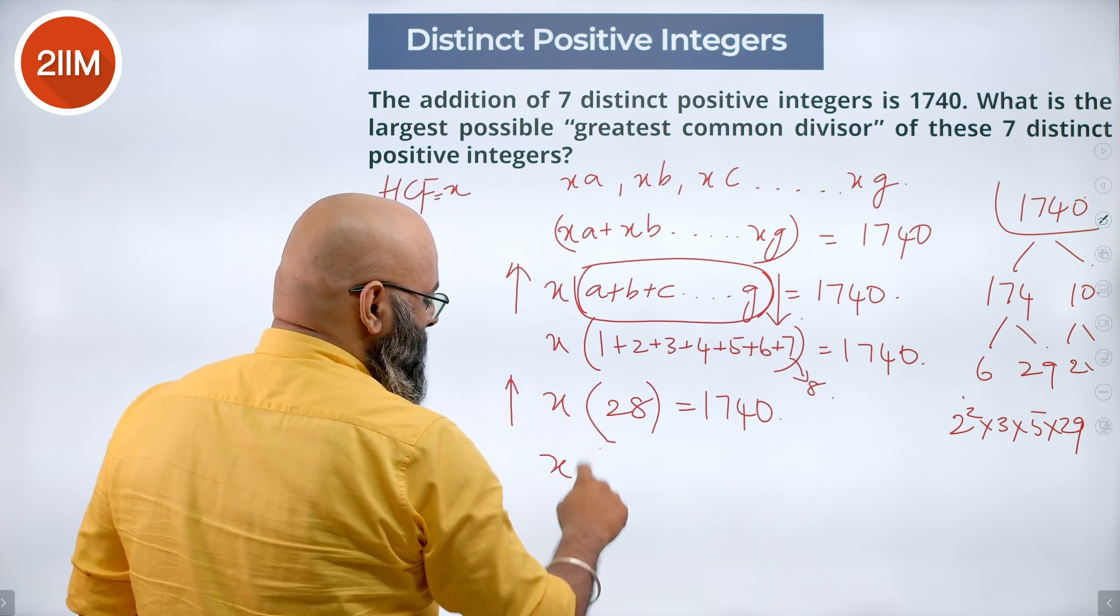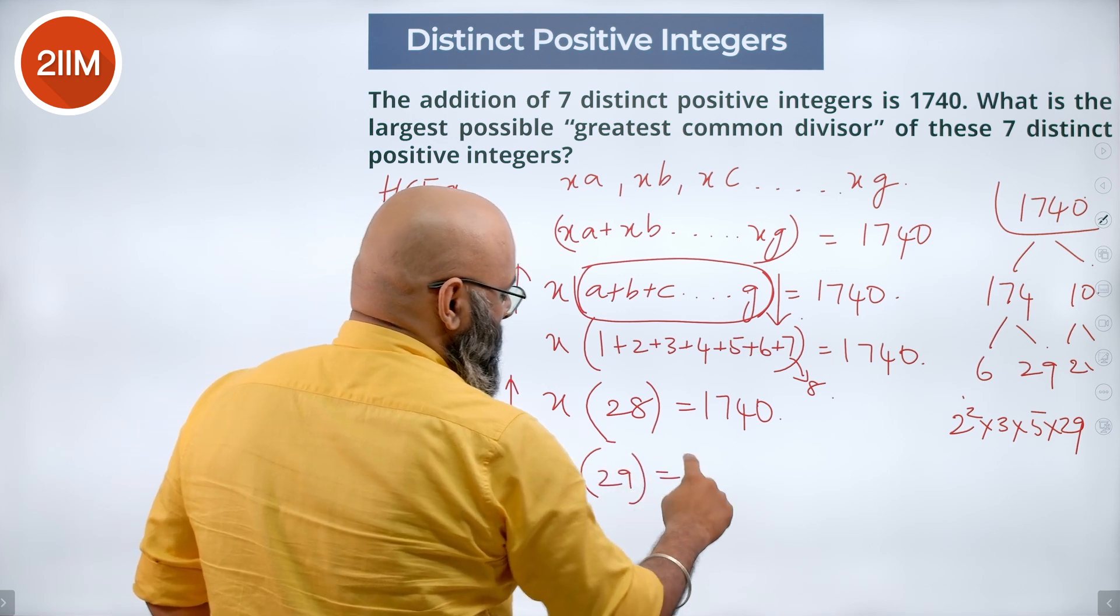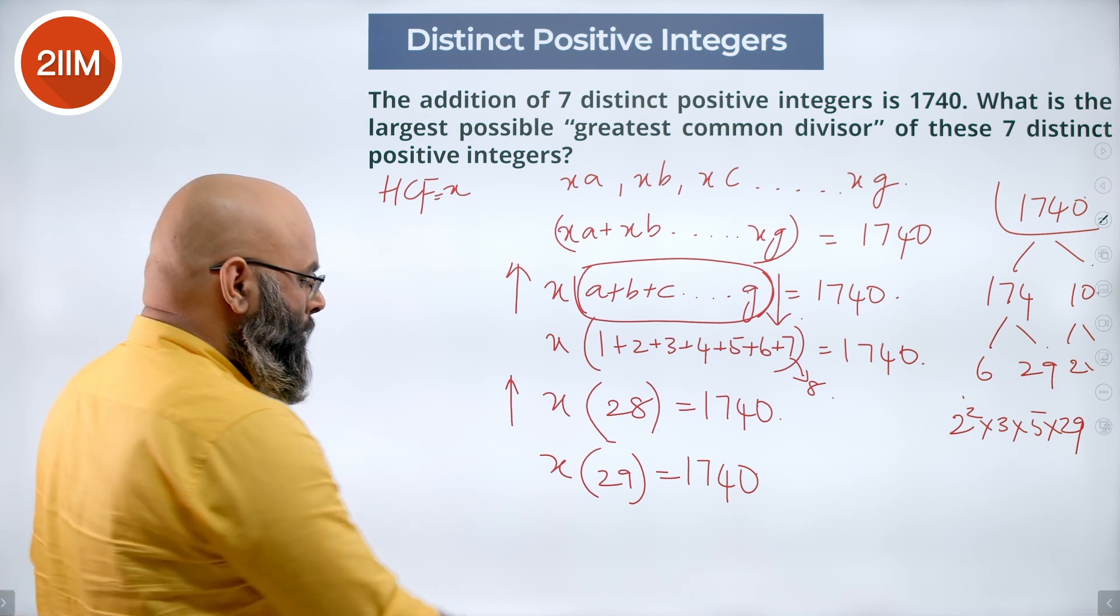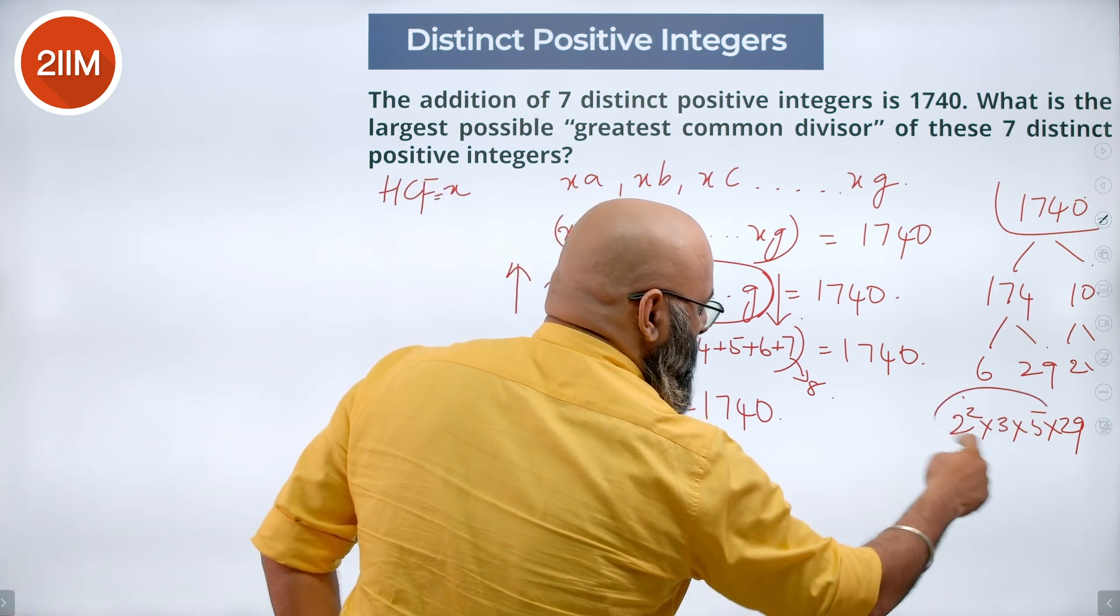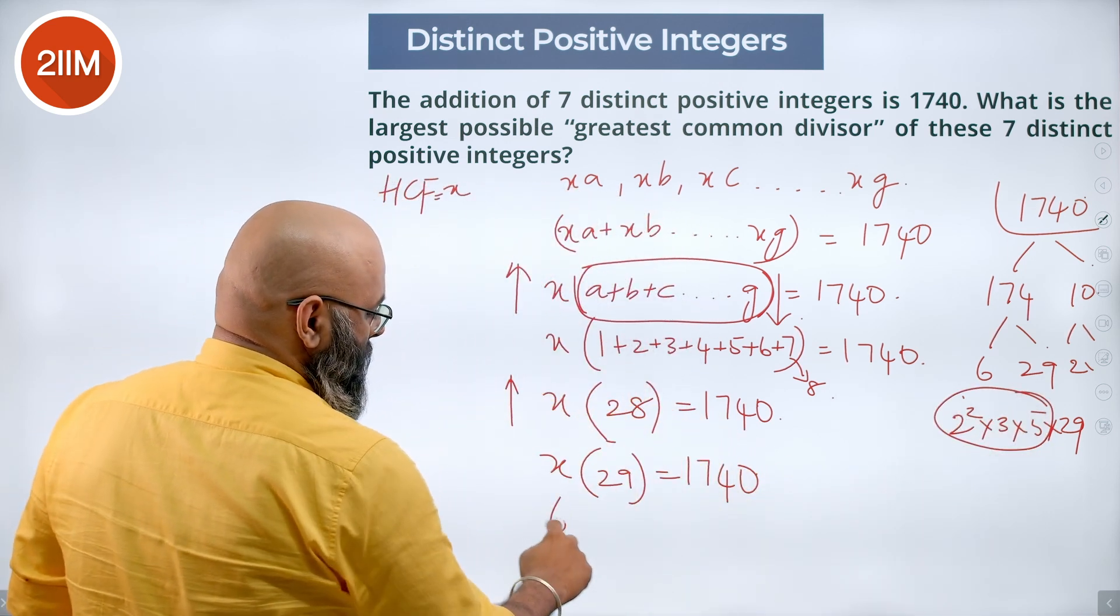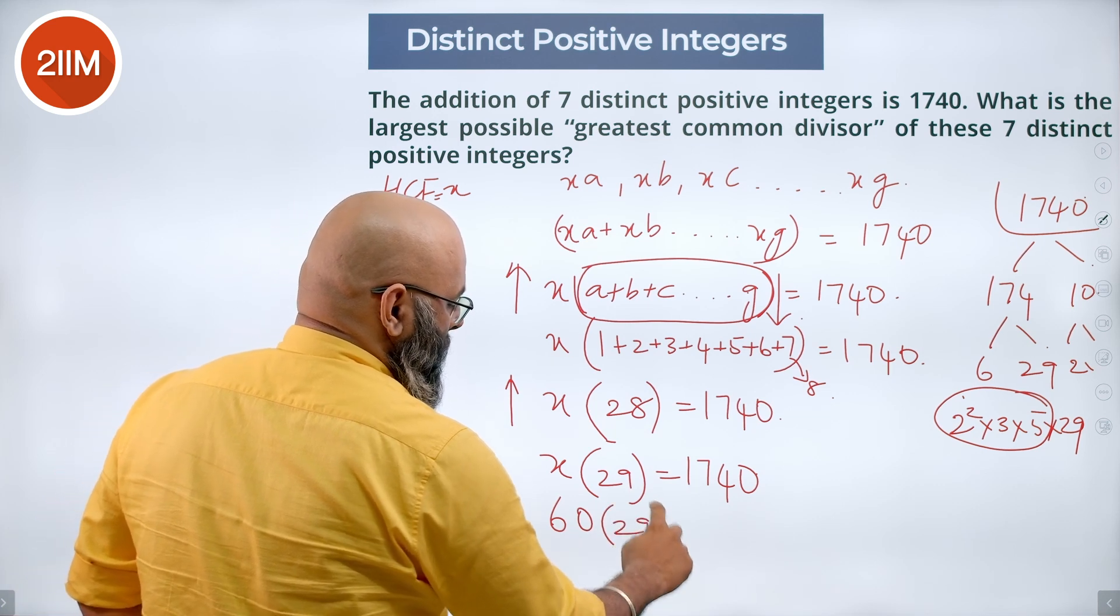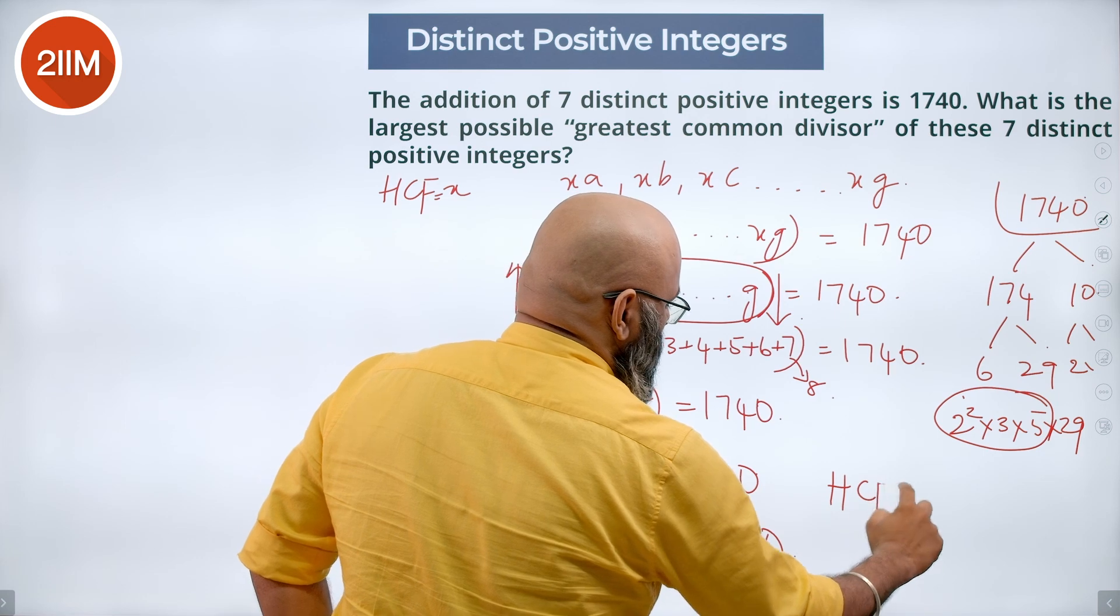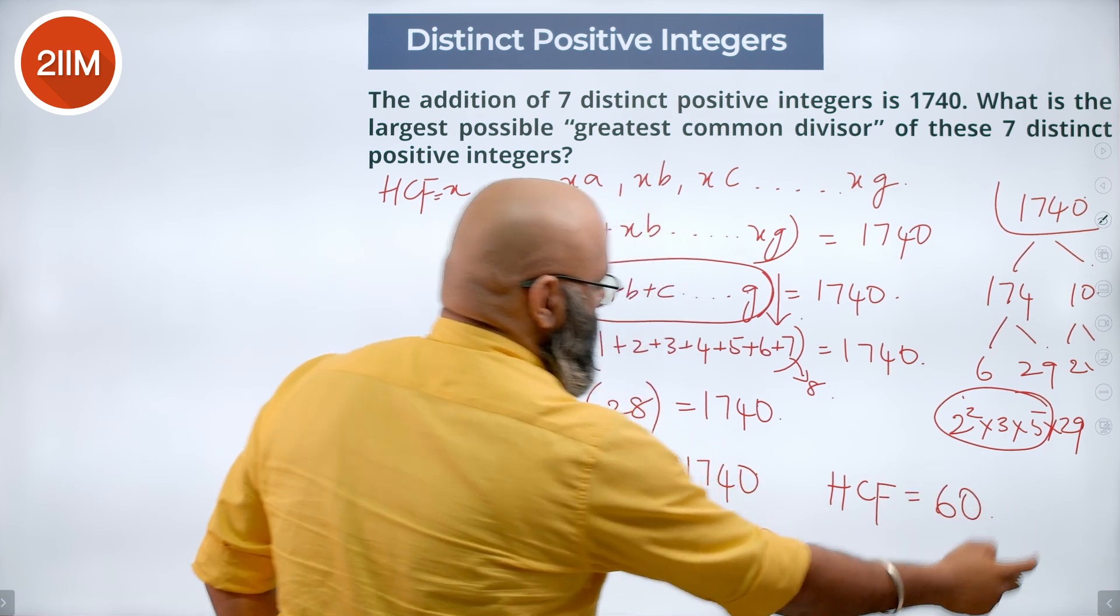This entire thing becomes X into 29 is equal to 1740. If this is 29, we know the remaining part over here is 60, so 60 into 29 is 1740. So HCF is equal to 60.